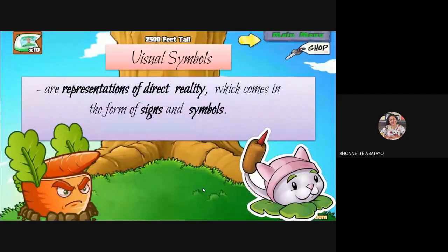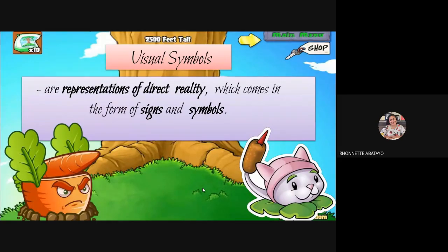Visual symbols are actually representations of the direct reality that we can see, which comes in any form — it can be a sign or it can also be a symbol. Our teachers would usually ask you to read a long paragraph, but it will be more meaningful if it's in the form of a graph, some pictures, or maybe a summary.